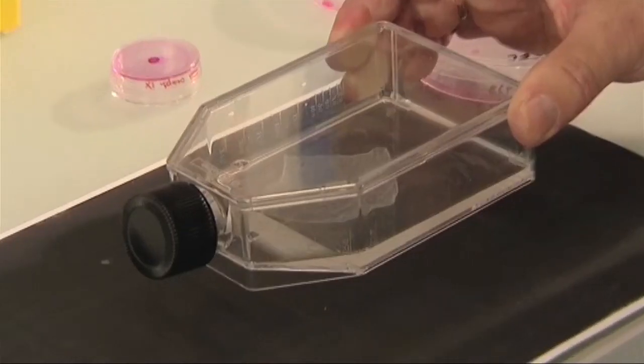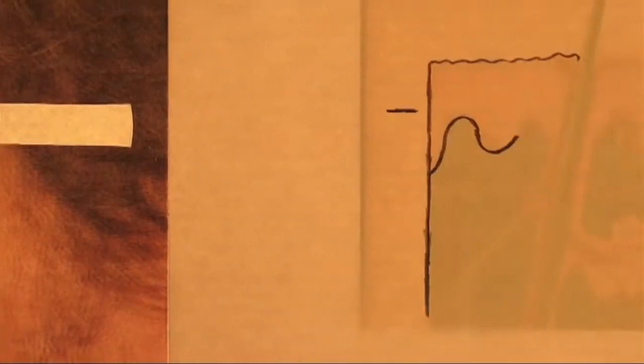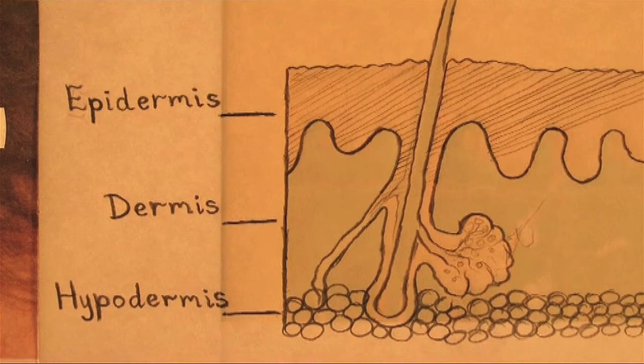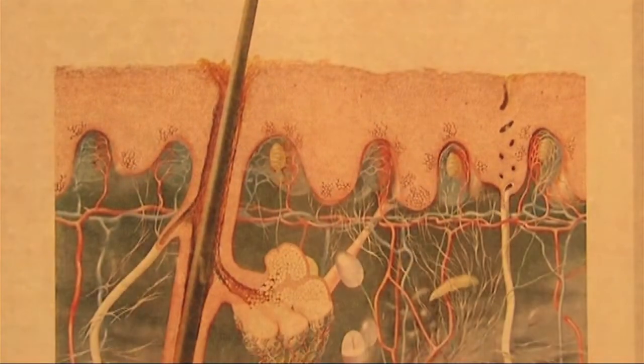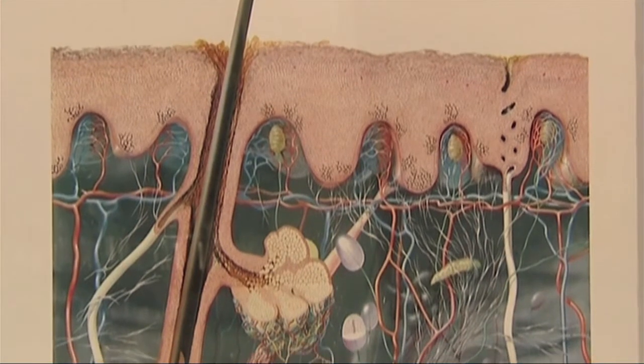Mit Hilfe einer speziellen Lösung entnehmen wir die Zellen. Dieses Zellgewebe bringen wir dann in den OP und setzen es dem Patienten ein. Bisher können wir nur einen Teil der Haut herstellen, nämlich die äußere Schicht. Die ist aber sehr wichtig. Ohne sie könnten wir nicht überleben.